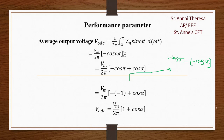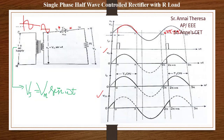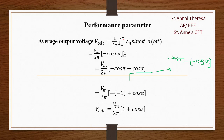Now we look at the performance parameters of the single-phase half-wave controlled rectifier. The average DC output voltage is: V0_DC = (1/2π) × integral from alpha to 2π of Vm sin(ωt) d(ωt). One complete cycle occupies 2π, hence the factor 1/2π. The output exists only from alpha to 2π, so those are the limits. The output follows the input, so Vm sin(ωt) is used in the integrand.